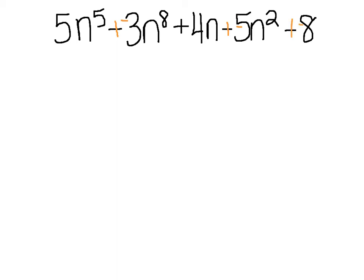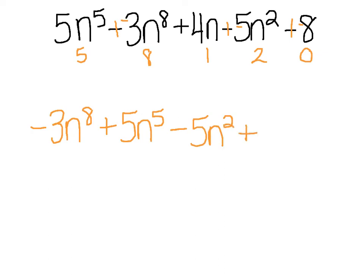Then I'm going to put them in order from greatest to least. Here we have 5, 8, 1, 2, and 0. So naturally, 8 comes first. So negative 3n to the 8th, and then plus 5n to the 5th, followed by negative 5n squared, plus 4n, minus 8.